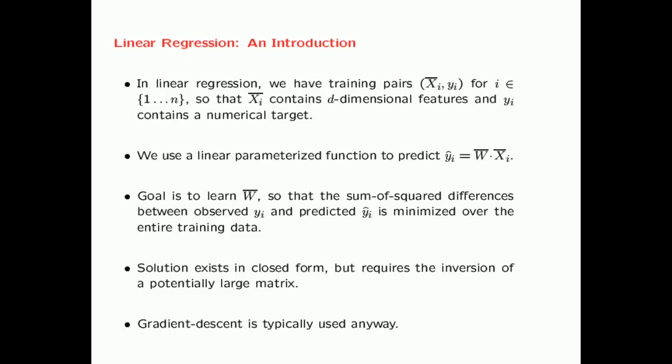In the book I have also shown a closed-form solution to this problem, but that requires the inversion of a potentially large matrix. So in practice, even for linear regression, you typically use gradient descent. We are going to discuss a neural model for linear regression which uses the same gradient descent update.